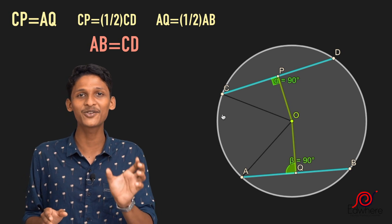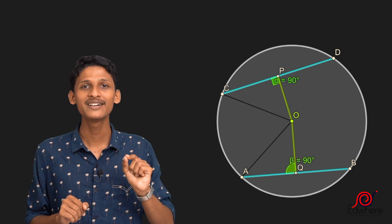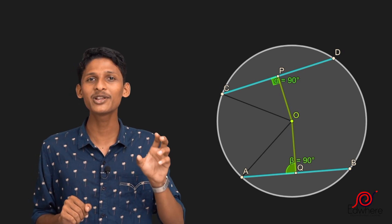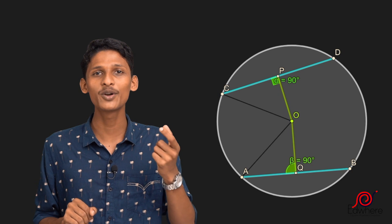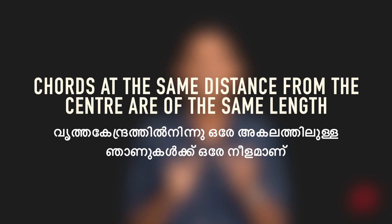That is why the two chords are equal. All the chords at the same distance from the center are of equal length. Chords at the same distance from the center of a circle are of the same length. Let's check out the problems for these things. Thank you. We'll see you next time.